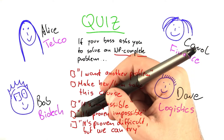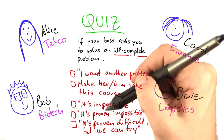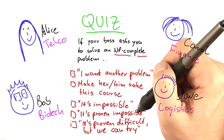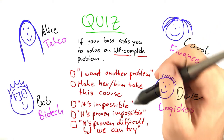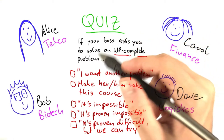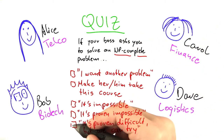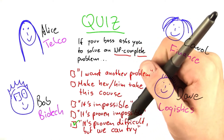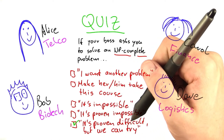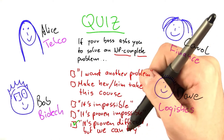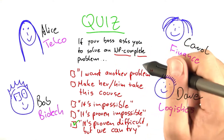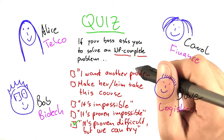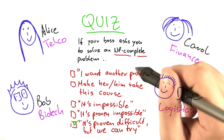A better answer would be to say it's been proven to be impossible. But I think that after this unit, you'll agree that the best possible answer is actually to say, well, it's been proven difficult or extremely difficult. But we can actually try to solve this problem even though it is NP complete. And I will show you how to approach that.